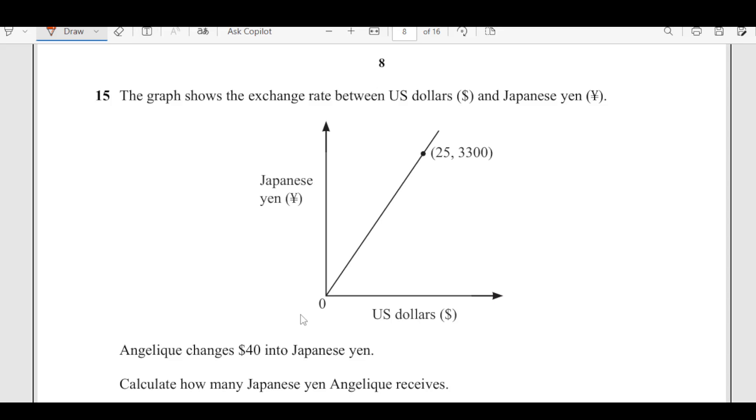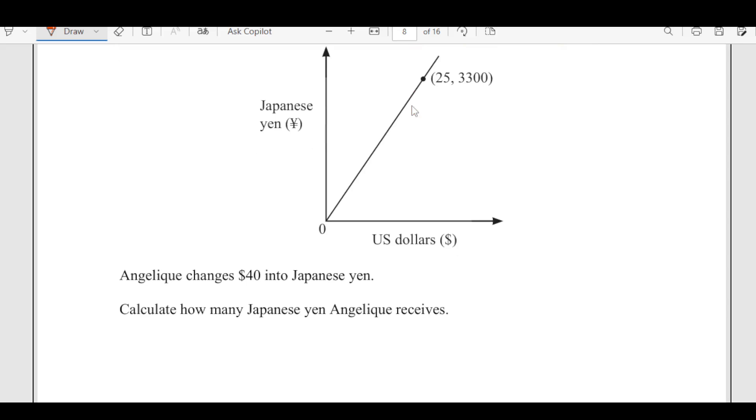The graph shows the exchange rate of US dollar and Japanese yen. Angelique changes 40 dollars into Japanese yen. Calculate how many Japanese yen will Angelique receive.